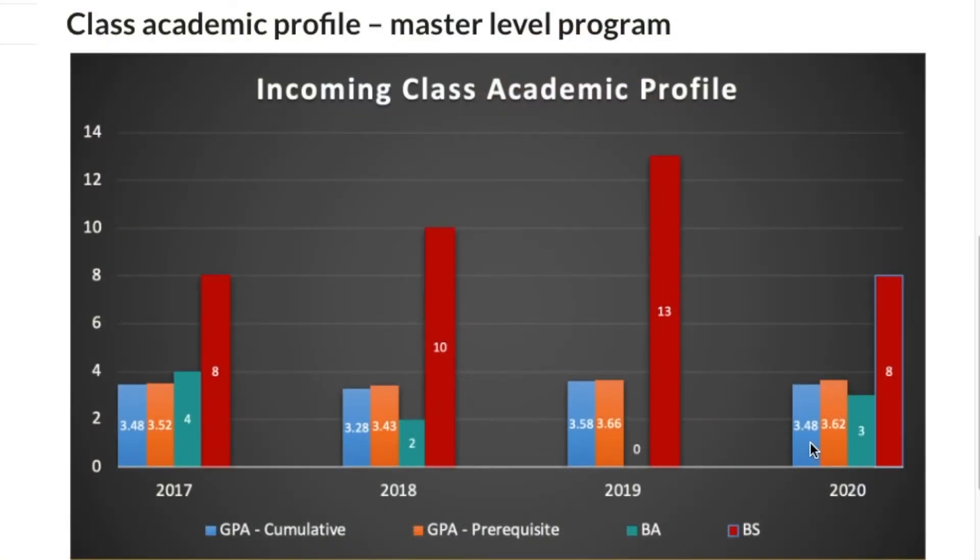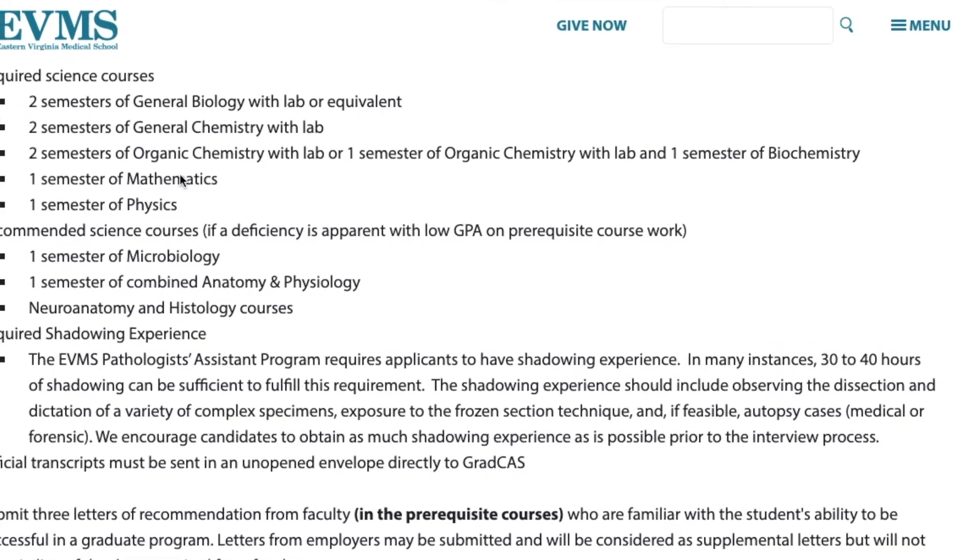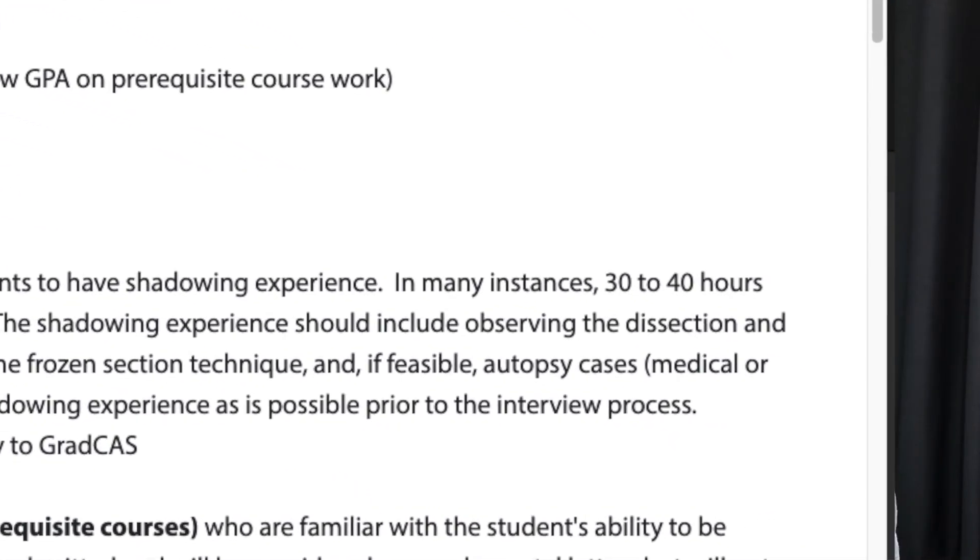While programs say 3.0 is the minimum GPA, class sizes range from 2 to 30 students per program, so average entrance GPAs tend to trend higher — around 3.3 to 3.6. Some programs require shadowing experience; some have no minimum, while others want 30 to 40 hours, which can be difficult to find. Another key difference is start dates and application deadlines — programs can start in January, summer, or fall, and application cutoffs vary accordingly, so you can't assume a single universal deadline.